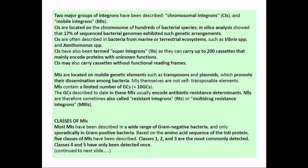Gene cassettes in mobile elements usually encode antibiotic determinants, because as mobile elements acquire antibiotic resistance properties, they can transfer their elements from one place to another — from one bacteria to another — and spread resistance. Integrons with antimicrobial resistance properties are called resistant integrons (RIs), and those with multiple drug resistance are called multiple drug resistant integrons (MRIs). Most antibiotic resistant integrons are found in the mobile integron group.